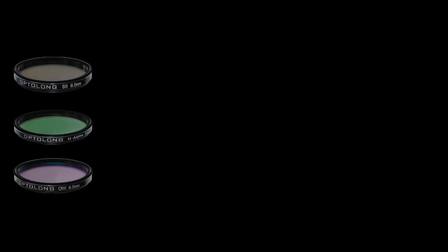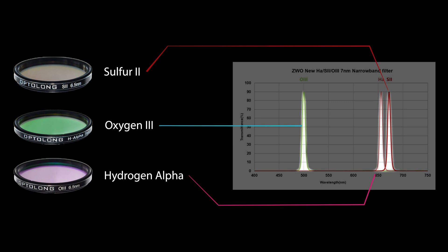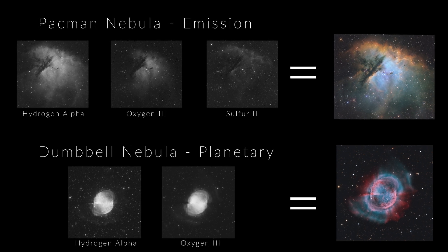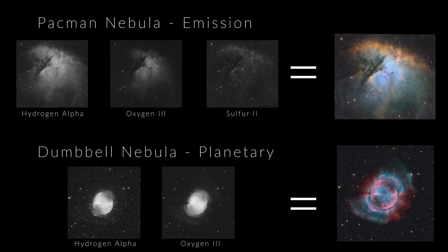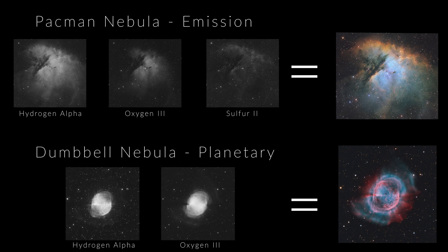Narrowband filters such as hydrogen alpha, oxygen 3, or sulfur 2 filters only allow a very narrow spectrum through to your camera sensor. This effectively blocks out nearly all other bandpasses and light pollution. Emission and planetary nebula emit strong light within these narrow spectra, which means these objects are perfect to image with narrowband filters.